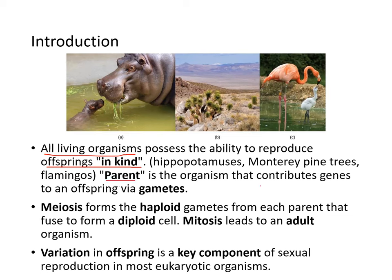The parent is the organism that contributes genes to an offspring via gametes. Meiosis forms the haploid gametes from each parent that fuse to form the diploid embryo, and then mitosis leads to the adult organism. Variation in offspring is a key component of sexual reproduction in most eukaryotic organisms.